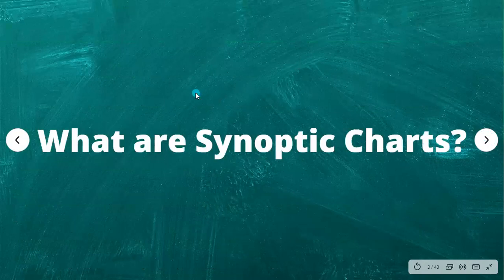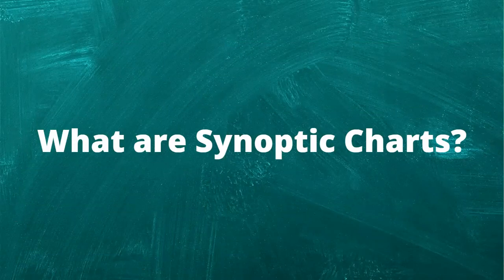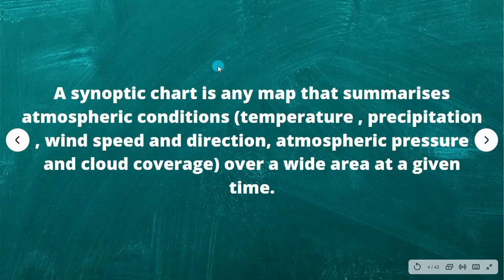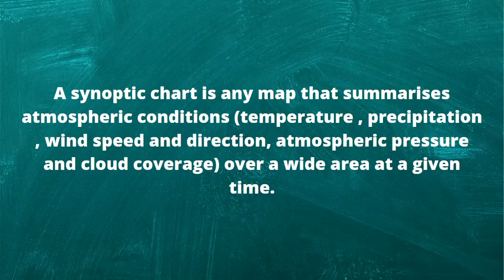To begin with, we must first ask ourselves: what are synoptic charts? A synoptic chart is any map that summarizes atmospheric conditions — that is temperature, precipitation, wind speed and direction, atmospheric pressure and cloud coverage — over a wide area at a given time. If this definition suits your fancy, take a screenshot or take a note of this in your notebook.